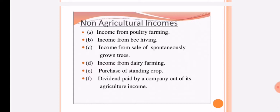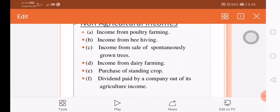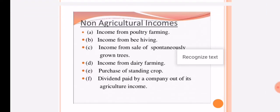Income from poultry farming is non-agricultural income. Income from dairy farming is also non-agricultural income. Income from bee-keeping and income from the sale of spontaneously grown trees are also treated as non-agricultural income.